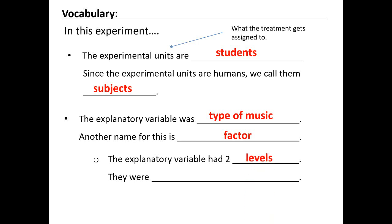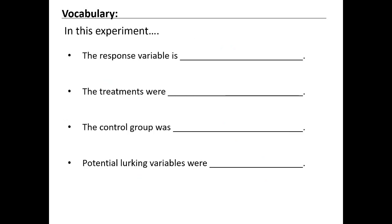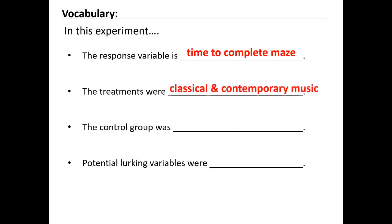The explanatory variable in this case has two levels: classical and contemporary music. The no music group isn't actually a level in this case, because it's not assigning one of our types of music. Our response variable — that's our dependent variable — is the time to complete the maze; it's what's measured. Our treatments are going to be classical music, contemporary music, and actually I would add no music as well, since you are being assigned no music.